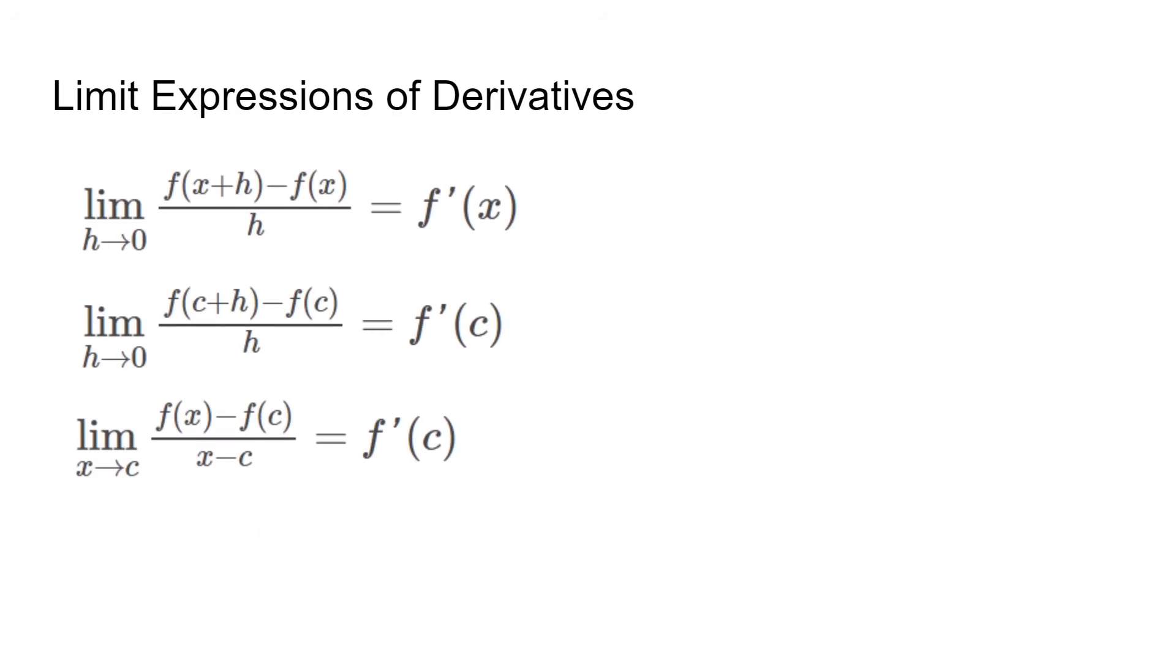As for instantaneous rates of change, there are different ways to express them using limits. A test question could ask you to solve for one of these forms. The first one returns the derivative as a function, which you can plug points into, and the other two return the derivative at a point.